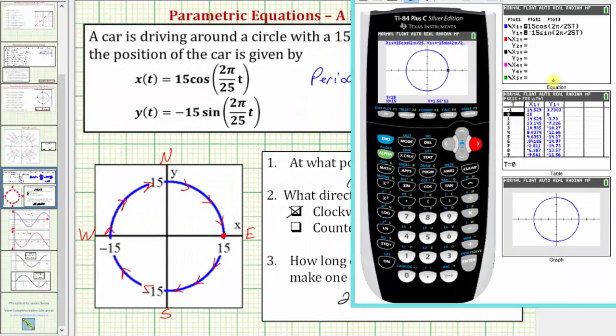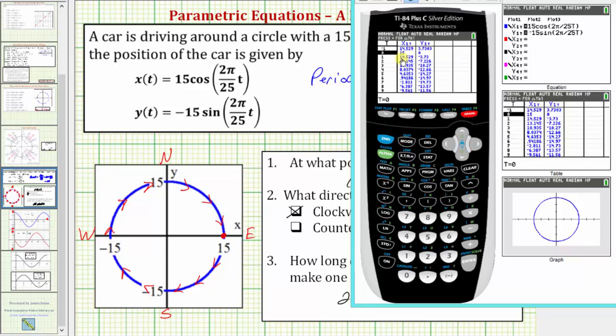We can also see this from the table. If we press second graph, again we're starting at the point fifteen comma zero, if we go down to t equals twenty-five, this would be the first time we return back to the starting position of fifteen comma zero.